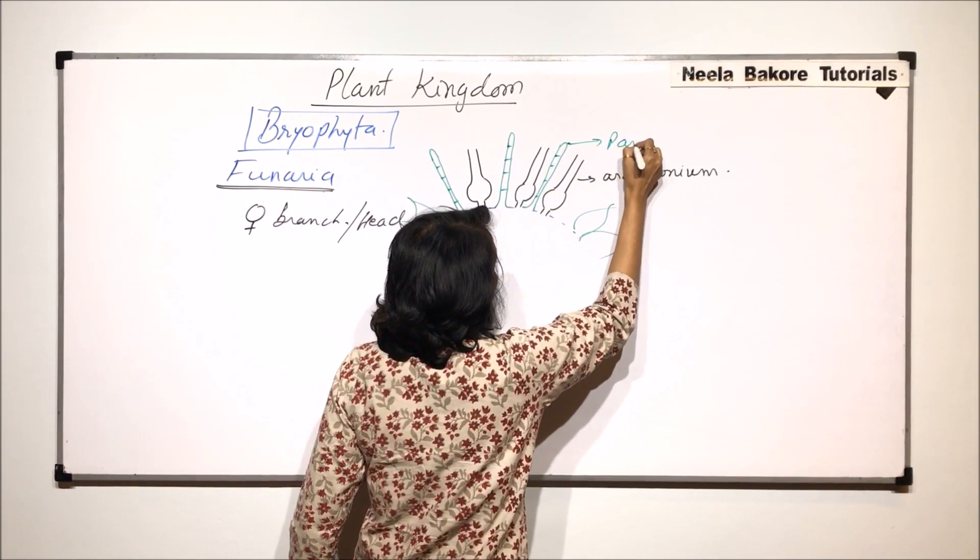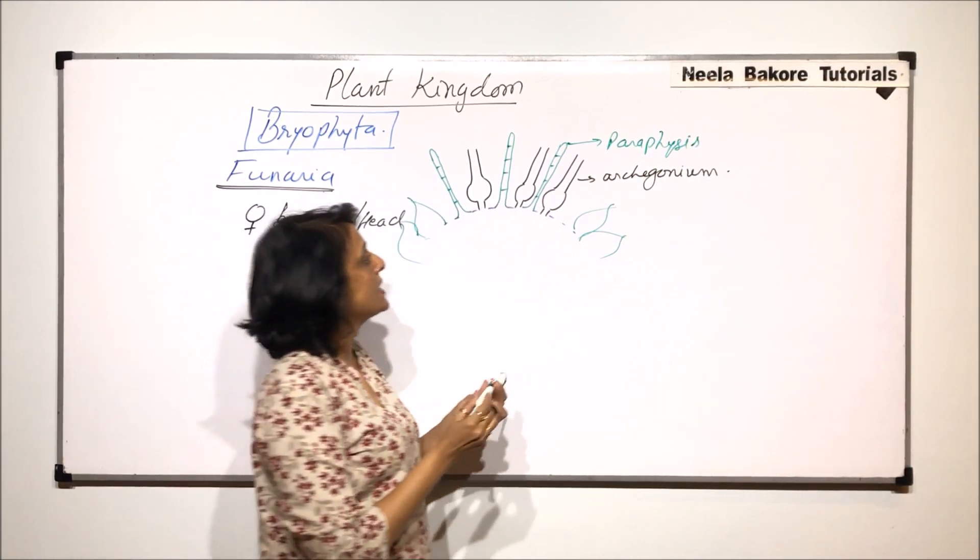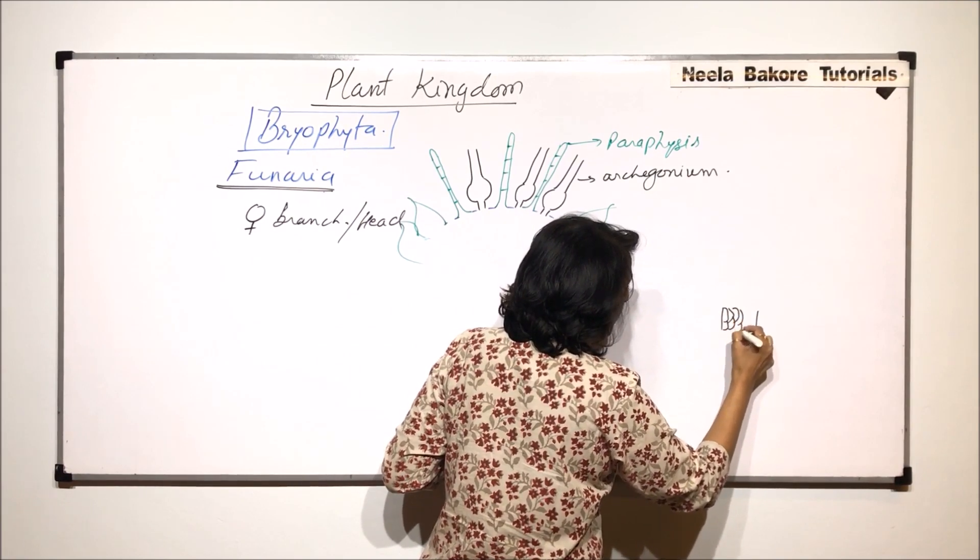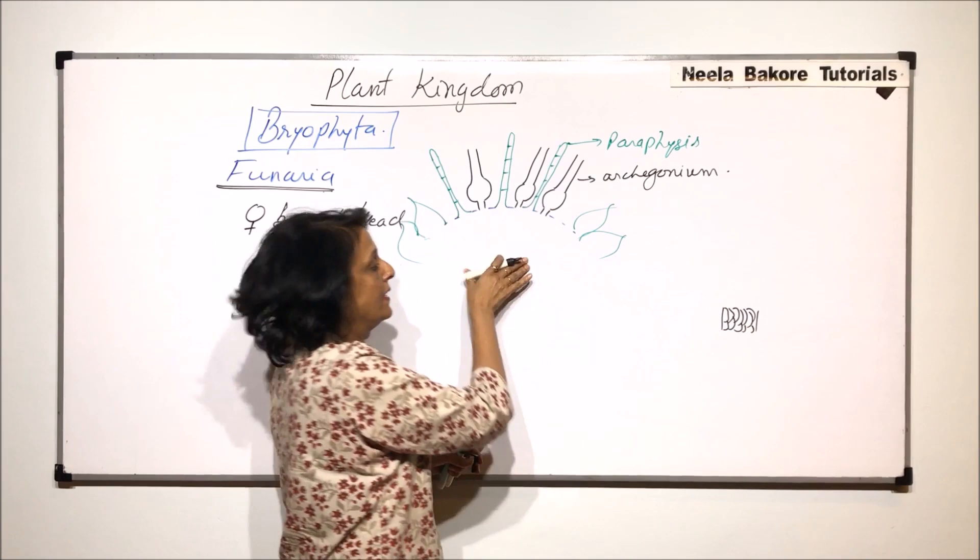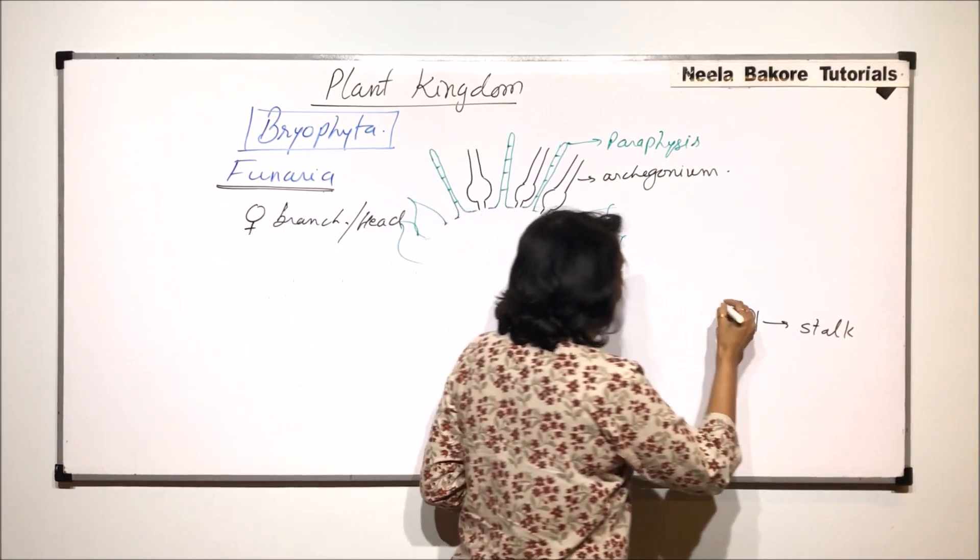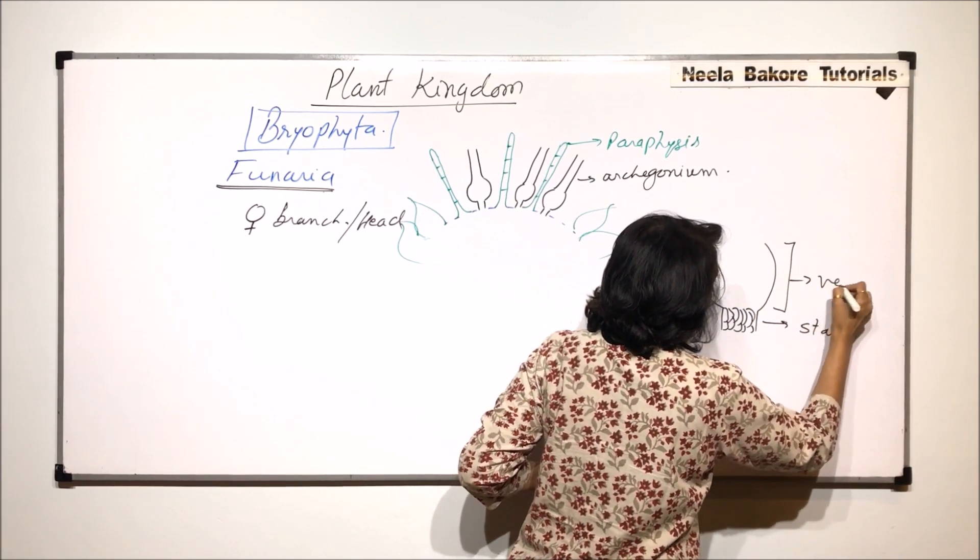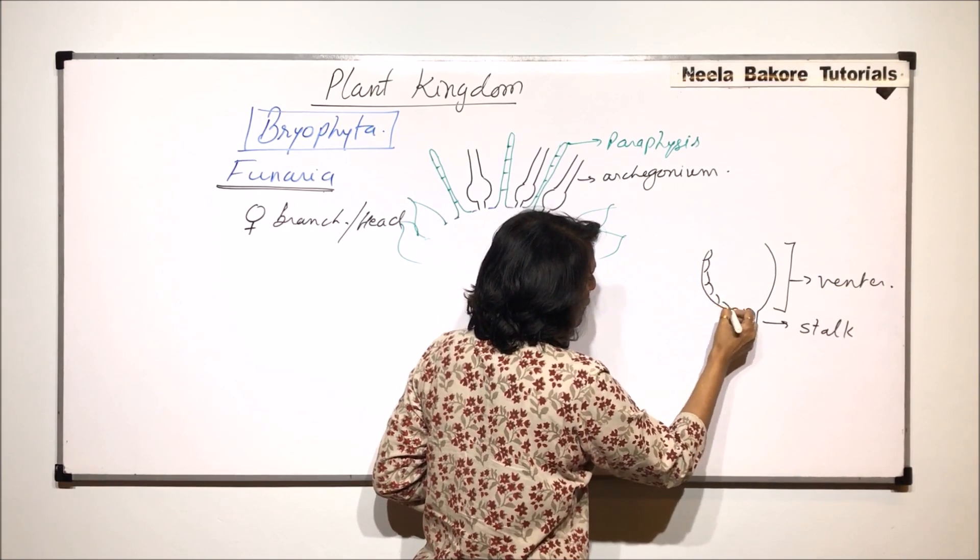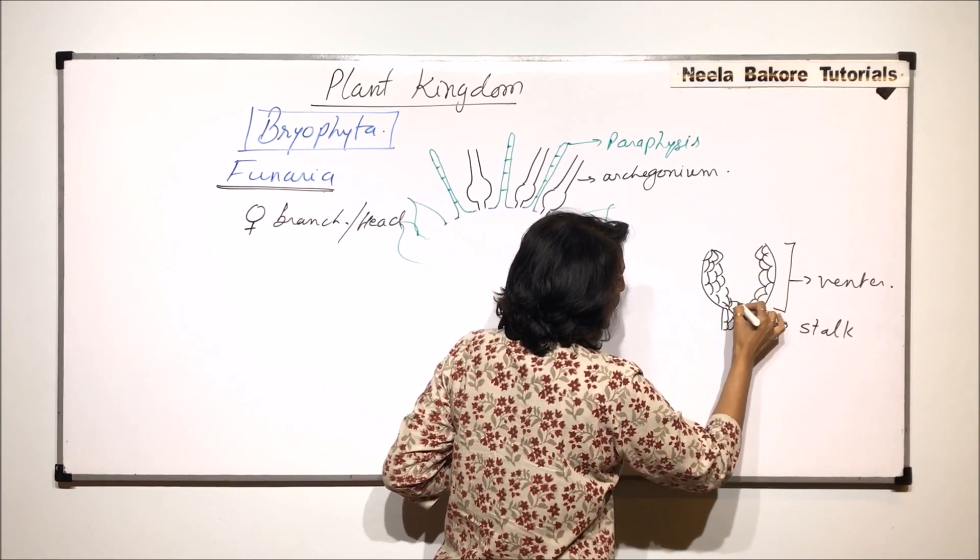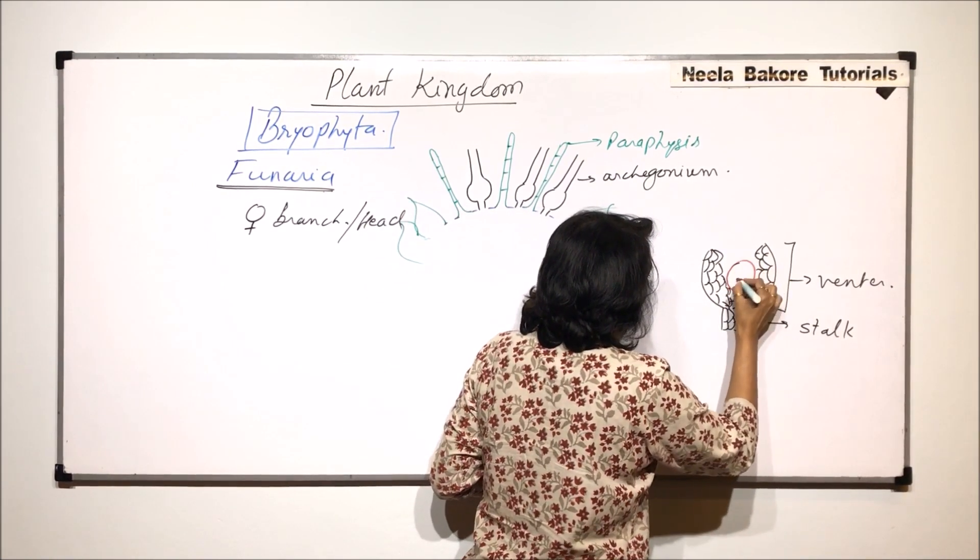Now if we see the detailed structure of this archegonia we find that there is a multicellular stalk with which it is attached to this particular head. So this is multicellular stalk. Above the stalk there is a swollen part and this swollen part is called the venter. In the venter the wall is made up of few layers of cells. That means it is solid. And in the central part there is a large egg which is placed.